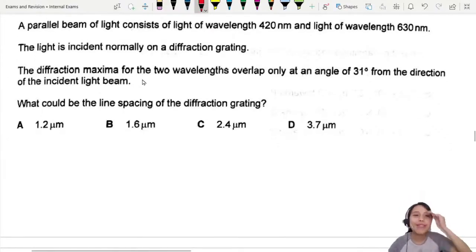A parallel beam of light consists of wavelength 420 nanometers, that's about blue color, and another wavelength of 630 nanometers, about orange color. The light is incident normally on a diffraction grating. The diffraction maxima for two wavelengths overlap only at an angle of 31 degrees.